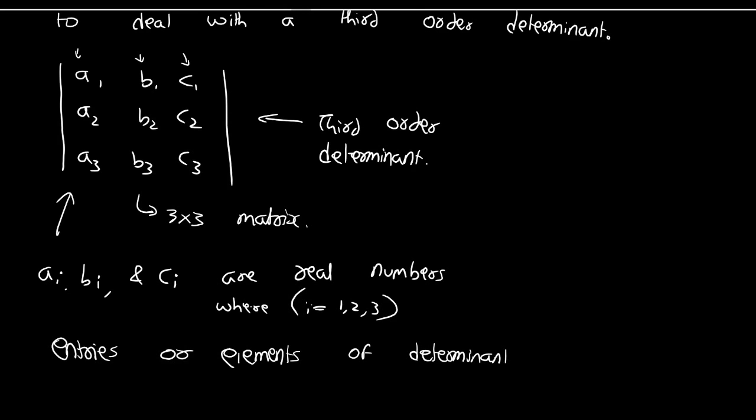So I can say A1, B1, C1, A2, B2, C2, A3, B3, C3 — they are all the elements of the third order determinant.